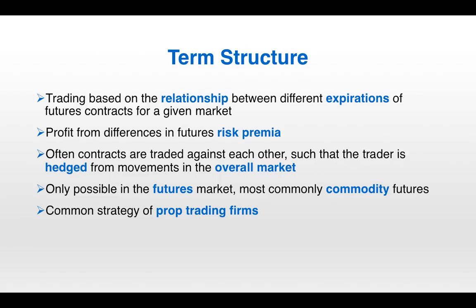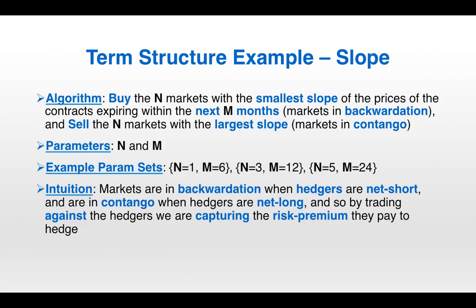Term structure strategies are only possible in the futures market and most commonly in commodity futures — you can't trade a term structure strategy in stocks because stocks don't have a term structure. These are a common strategy of prop trading firms. An example is trading based on the slope of the term structure: buy the N markets with the smallest slope of contract prices expiring within the next M months — these are markets in backwardation — and sell the N markets with the largest slope, which are markets in contango. The strategy has two parameters, N and M. The idea is that when markets are in backwardation, hedgers are net short, and when in contango, hedgers are net long, so we trade against the hedgers and capture the risk premium they pay to hedge.